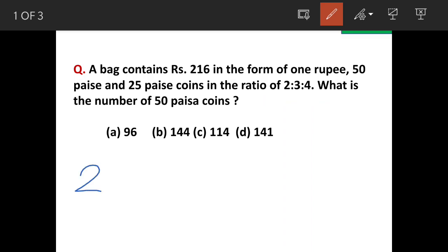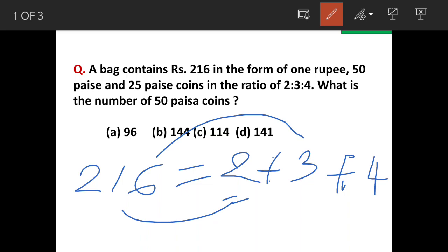We will understand the question. 216 is having a ratio of 2 is to 3 is to 4. That means it will have total 9 parts—2 plus 3 plus 4 equals 9 parts. The 2 represents 2 parts of 216, the 3 represents 3 parts of 216, and similarly 4 represents 4 parts out of 216.